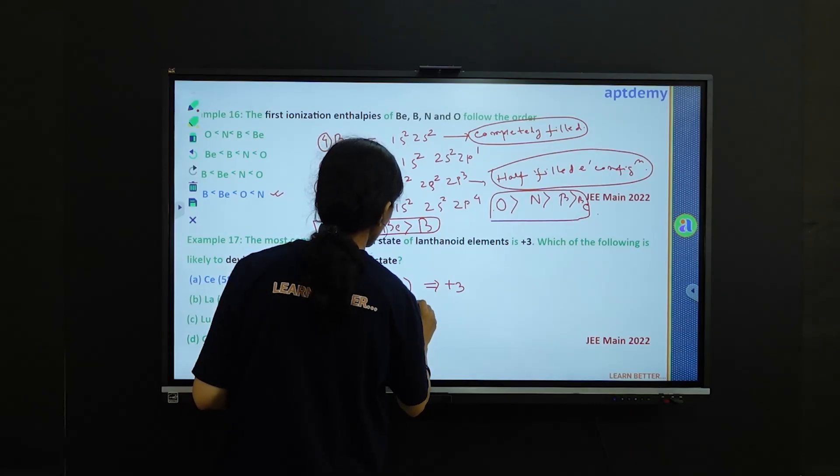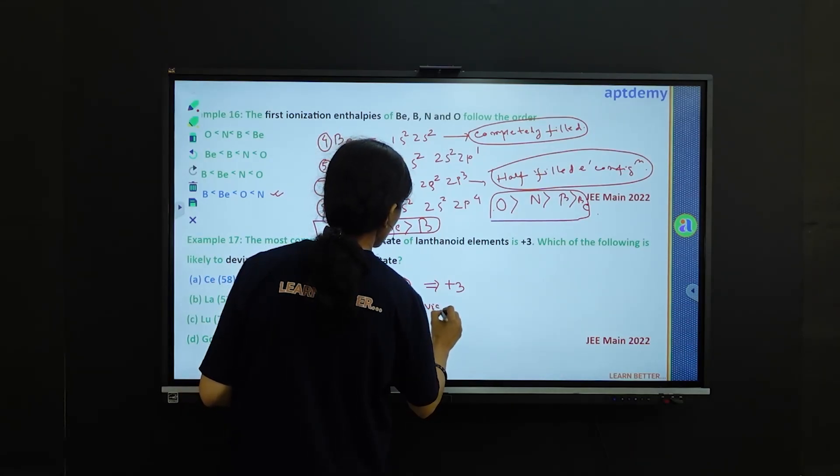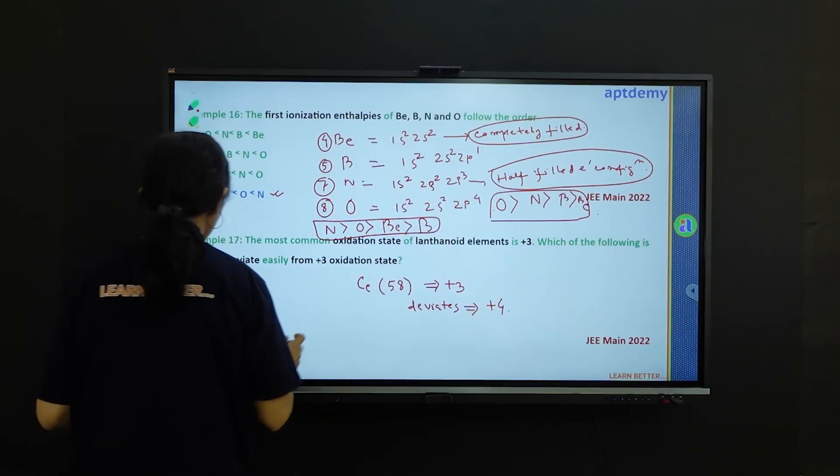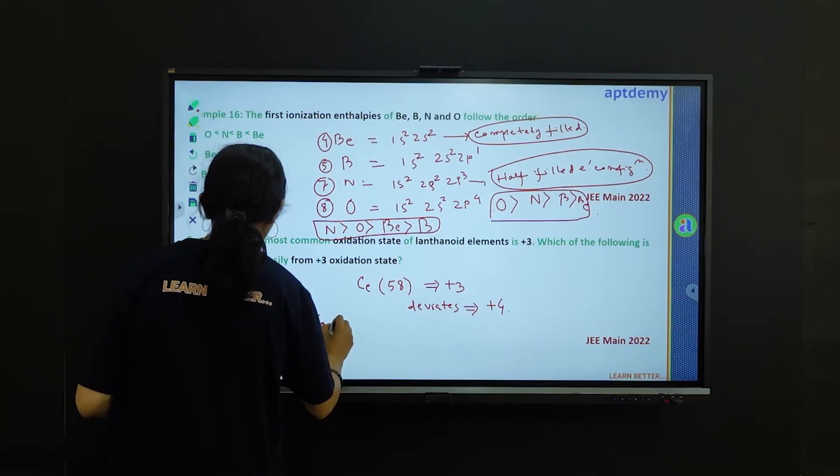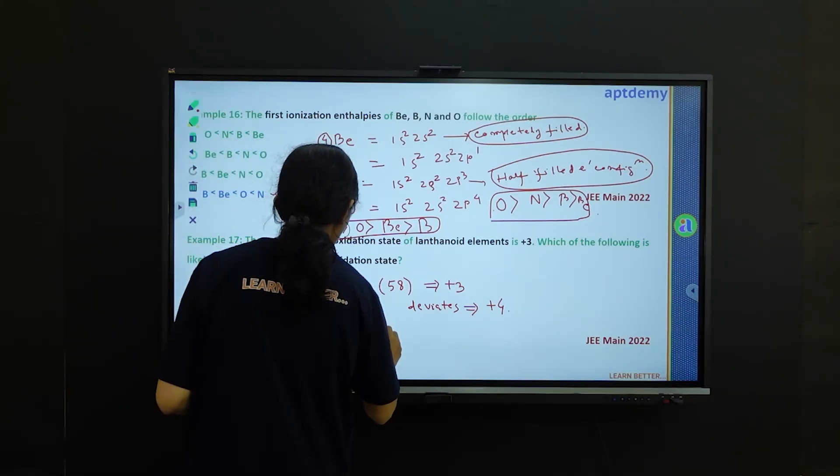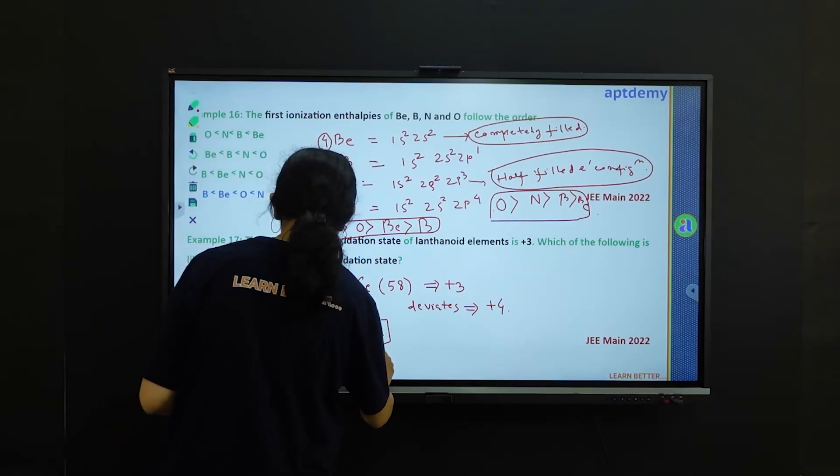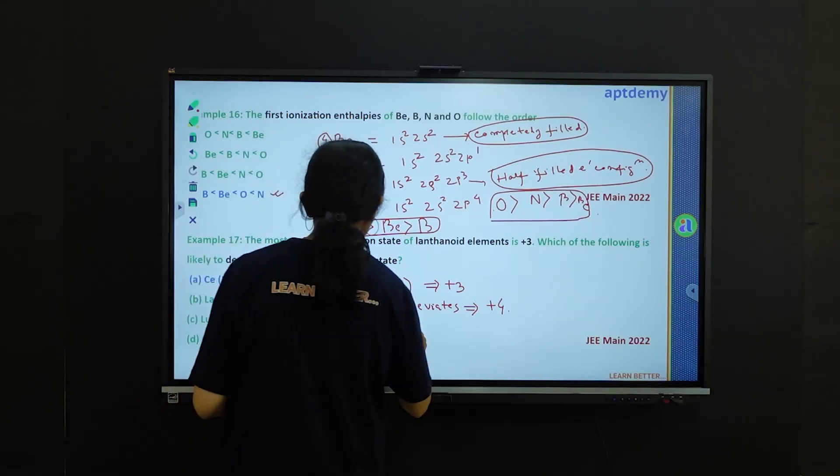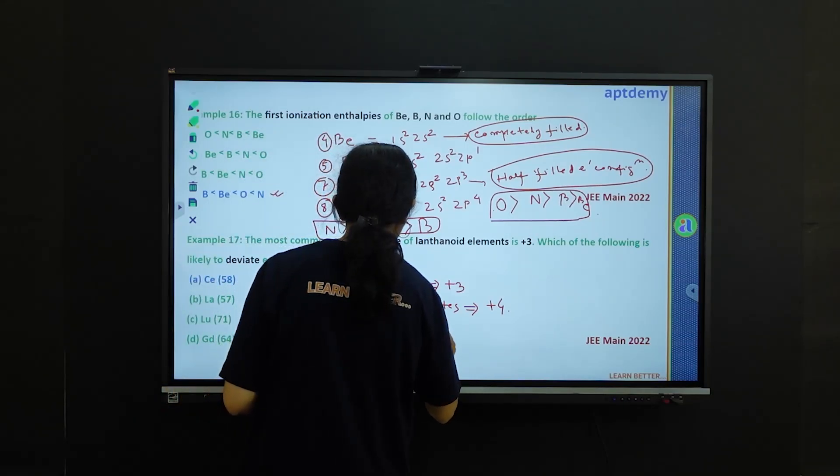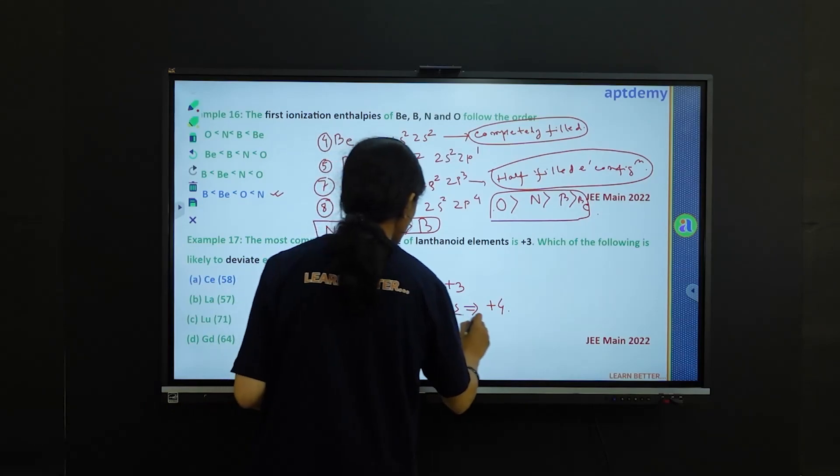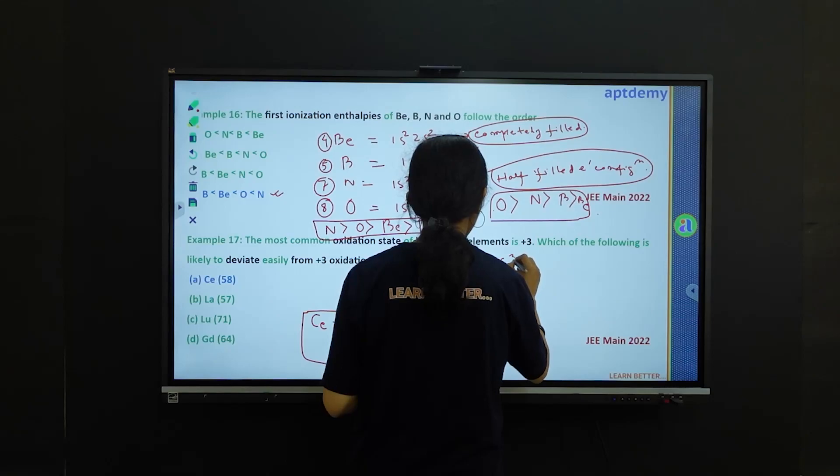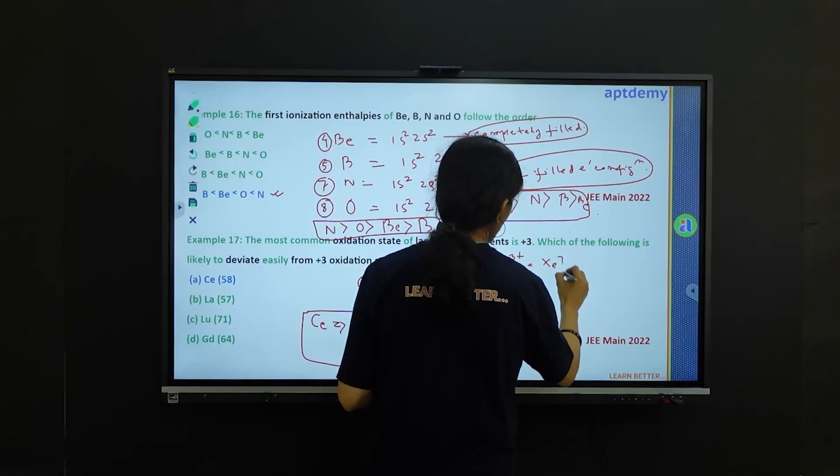Why? If you consider the electronic configuration of Ce, you will get the noble gas configuration of xenon, which is 54, and the rest is 4f1 5d1 and 6s2. This is for Ce.